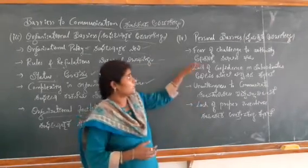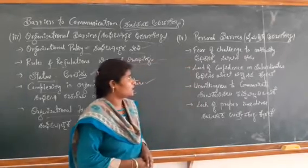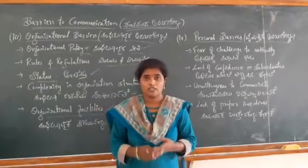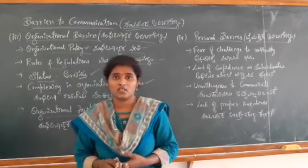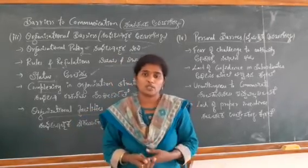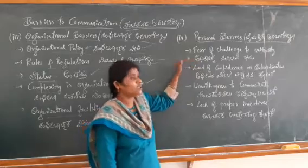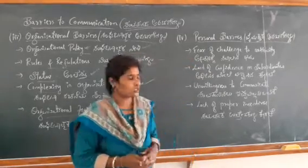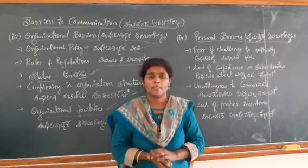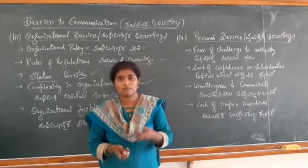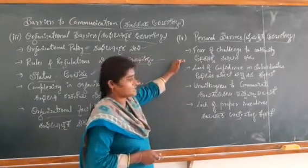There are four personal barriers. First one is fear of challenge to authority. If the person who is having the authority is not able to express his ideas to the subordinates, then personal barriers arise. If you are not having confidence in your communication skill, if you do not know what information to tell, if you are having fear — then you are not able to give the correct information and cannot communicate with the sender and receivers. The supervisor has authority but is not capable of expressing his ideas, and so barriers arise.